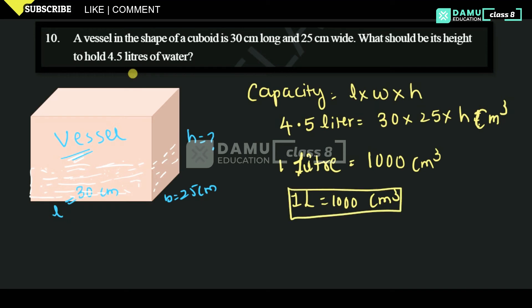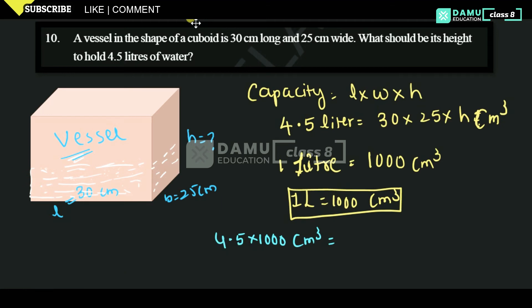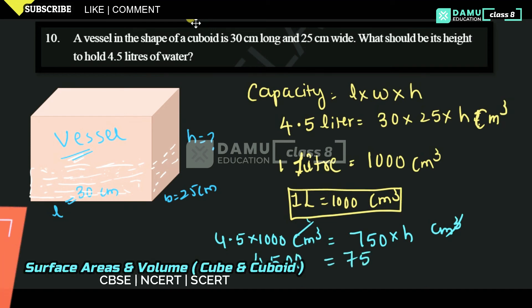Let's take 4.5 times 1000 cm cubed equals 30 times 25. So 30 times 25 is 750 times H. Centimeters cancel, but H we have to calculate. So it will be 4.5 times 1000 equals 4500.